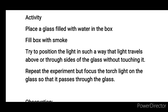Activity: Place a glass filled with water in the box. Fill the box with smoke. Try to position the light in such a way that light travels above or through the sides of the glass without touching it. Then repeat the experiment but focus the torch light on the glass so that it passes through the glass.